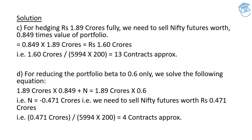For hedging 1.89 crores fully, we need to sell nifty futures worth 0.849 times the value of the portfolio. So 0.849 multiplied by 1.89 crores comes out to be 1.60 crores. By selling securities worth 1.60 crores, we have actually hedged our position completely against 1.89 crores of buying. To find the number of contracts, divide 1.60 crores by the theoretical future price of 5994, then multiply by the lot size of 200, and you will get approximately 13 contracts. So you need to short nifty futures with approximately 13 contracts.